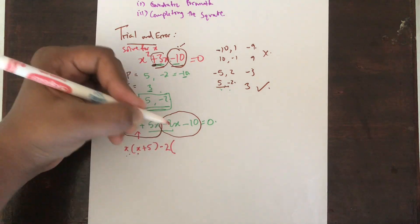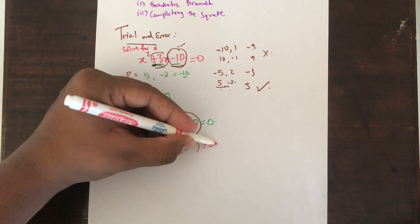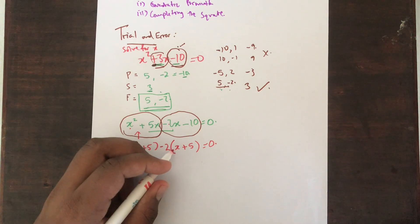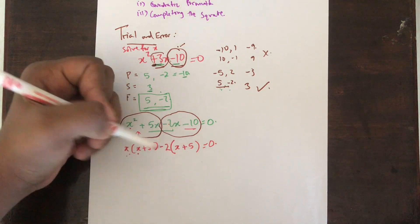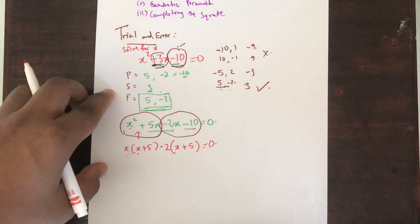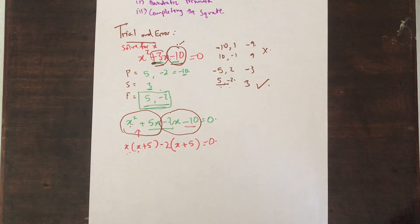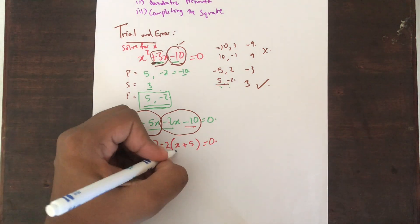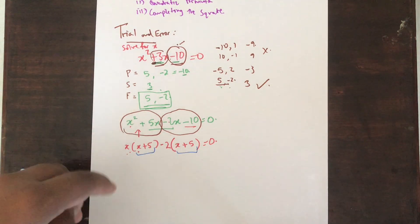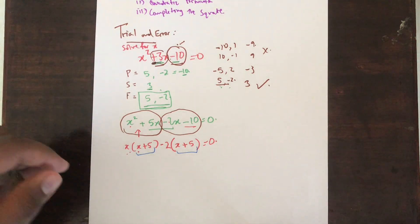So x plus 5 also comes here. Minus 2 times x gives minus 2x, and minus 2 times 5 gives minus 10. One important thing to note: the brackets you get must always be the same — this bracket and this bracket must always be the same — in order to use the trial and error method.